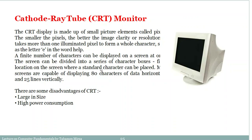The screen can be divided into a number of character boxes, and every character box has a fixed location on the screen. Monitor screens are capable of displaying 80 characters of data horizontally and 25 lines vertically. A disadvantage of CRT monitors is that they are not much in the market today — they were larger in size and put a strain on your eyes.